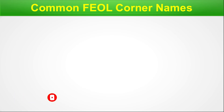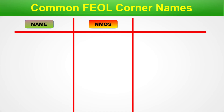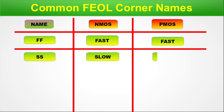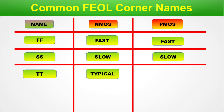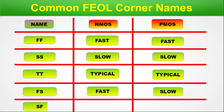For the common FEOL corner nomenclature, here is a table: FF means NMOS is fast and PMOS is fast — the first F comes from NMOS and the second F from PMOS. SS means slow NMOS and slow PMOS. TT means typical NMOS and typical PMOS. FS means fast NMOS and slow PMOS. SF means slow NMOS and fast PMOS. All these abbreviations point to the speed of the NMOS and PMOS of a balanced CMOS.